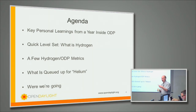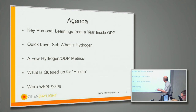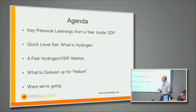One of my colleagues in this area is John Doyle at Caltech — the ultimate wizard of control theory. So the structure of this talk: learnings from a year inside, a little bit about what Hydrogen is, a few metrics, and then what's queued up for Helium.